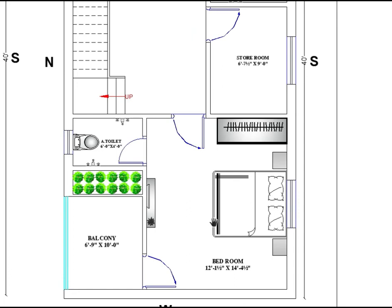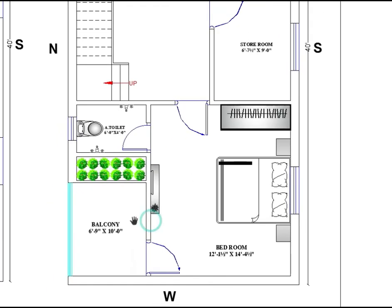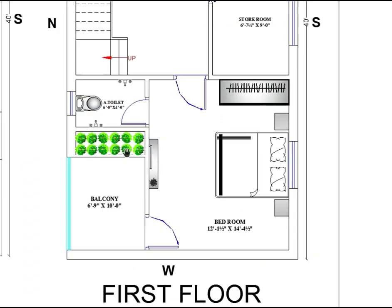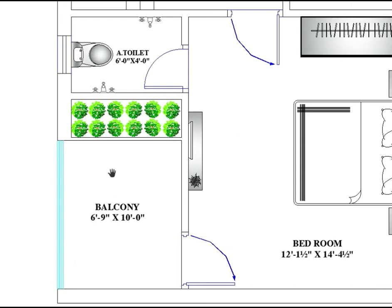Here is another bedroom, different from the other two, which is 12 feet by 14 feet 4 inches — horizontally 12 feet and vertically 14 feet 4 inches. In the adjoining area, a wardrobe space is also provided. There are green patches included for sustainable architecture.